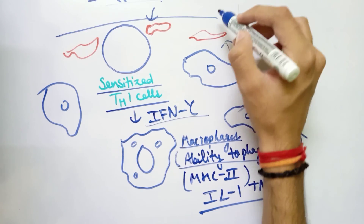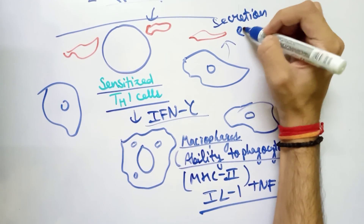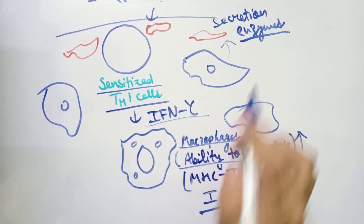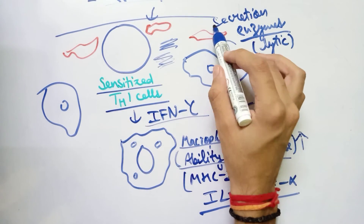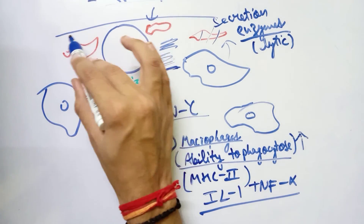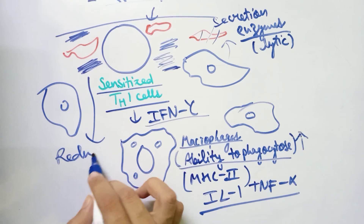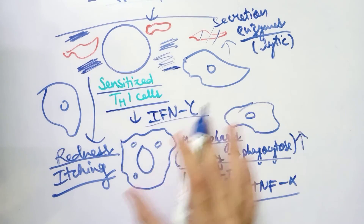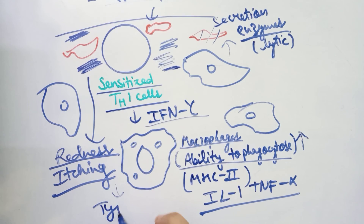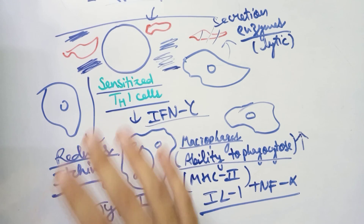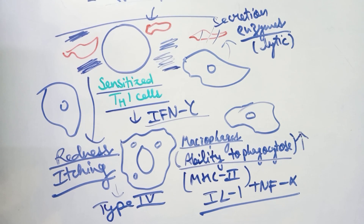As more and more allergens enter through the epidermis, the increased quantity of macrophages and monocytes act on these antigens and produce large amounts of secretions — lytic enzymes that help in killing the foreign antigens. However, in the process, these lytic enzymes also damage the skin tissue cells, causing redness and itching. This redness and itching of contact dermatitis is the result of the Type 4 hypersensitivity reaction. If you have any doubts, you can ask them in the comment section.